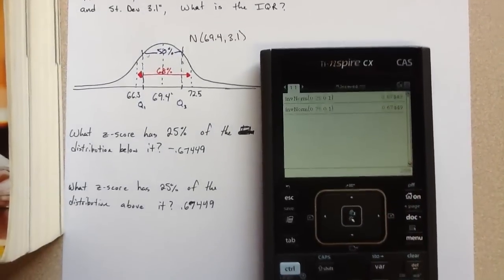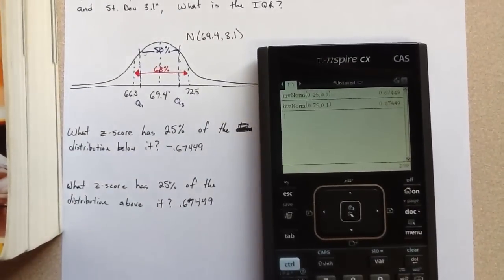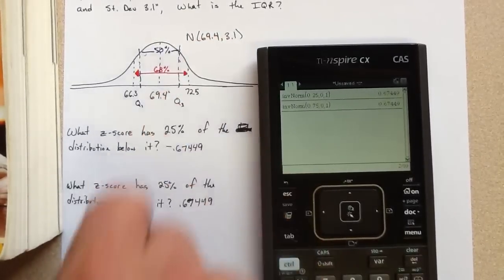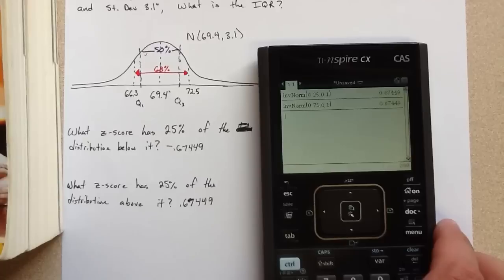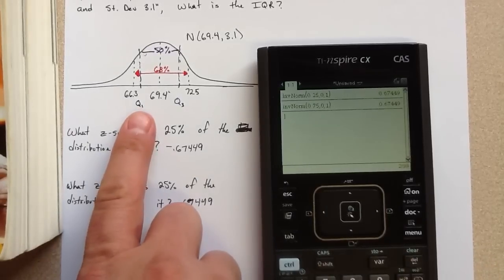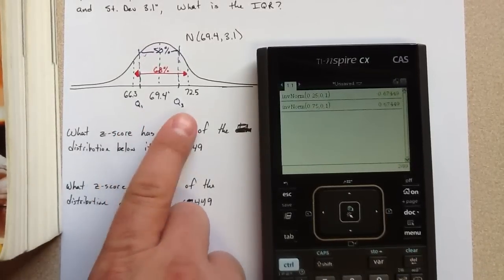Okay, so now that I have those z-scores, I can use z-scores when I know the mean and standard deviation to determine a specific x value, or in this case Q1 and Q3.